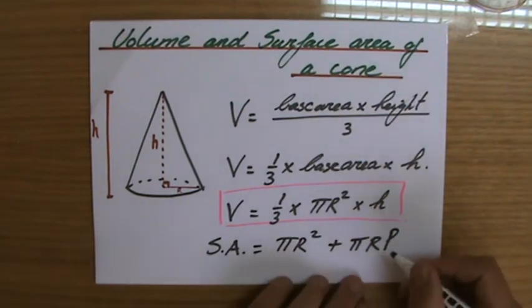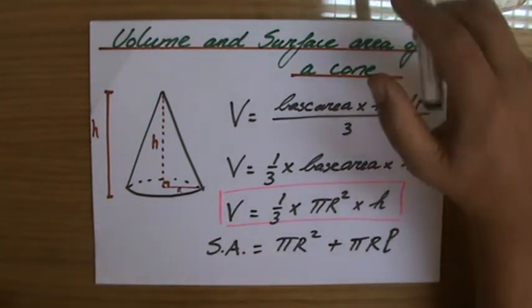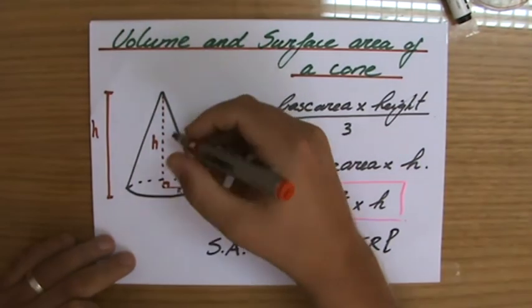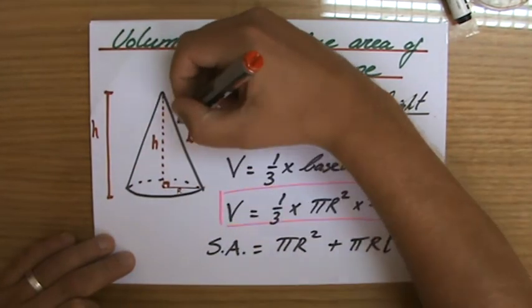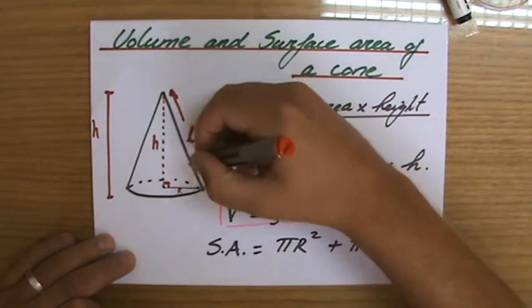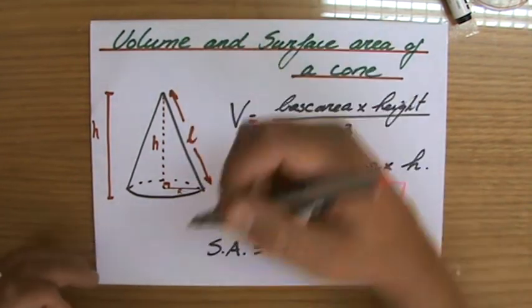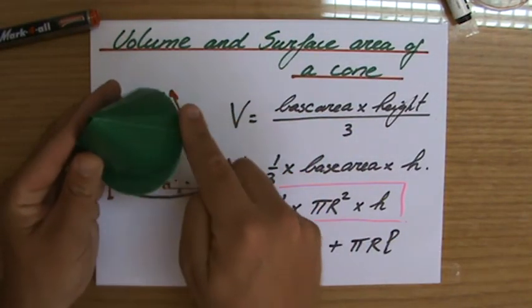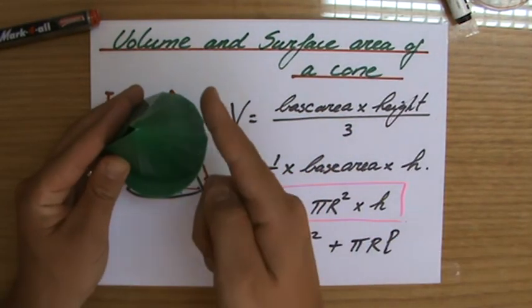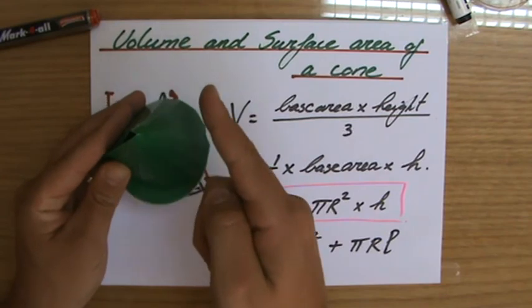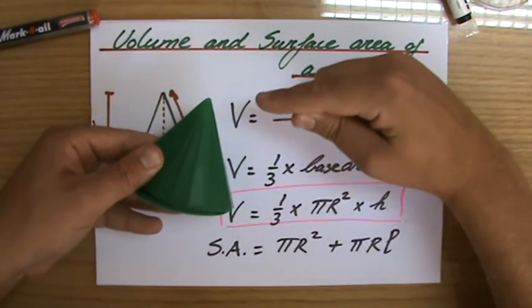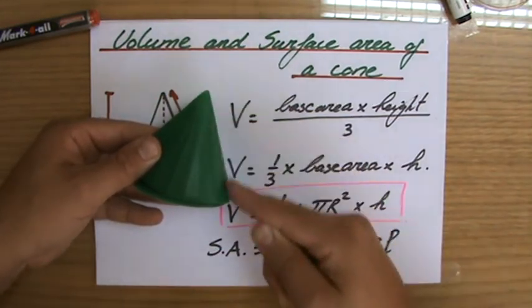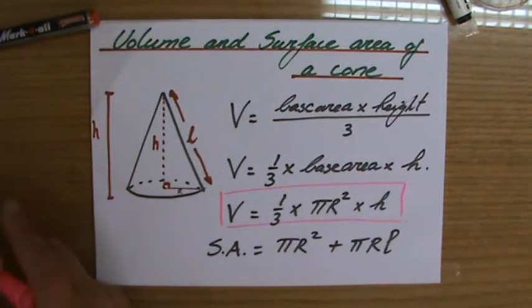The l is the slant height. So if I grab my cone, the l would be this height. We have a perpendicular height, and now the l is the slant height. Again the formula will be given to you in the question. However, you should know what it all means—that surface area, base area plus the curved surface, that's pi r l, pi times the radius times the slant height.